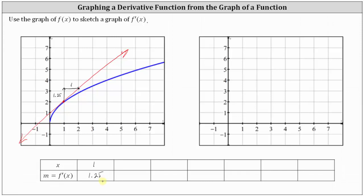Now let's sketch the tangent line at x equals two and approximate the slope. From the point of tangency, if we go up two units and right three units, we find another point on the tangent line. The slope of the tangent line and the derivative function value is 2/3 at x equals two. So the point (2, 2/3) is one point on the graph of the derivative function.